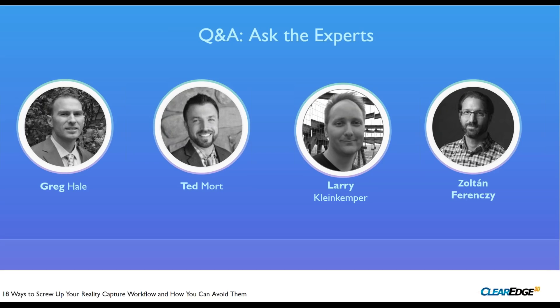A clarifying question for Ted: are you recommending a single high-resolution scan in the middle of a corridor with normal resolution scans elsewhere? Ted confirms: ideally, position a couple of high-resolution scans in the corridor — it takes a bit longer but gives greater point density at distance to help alignment. However, it's not required. If the field crew ran through at typical density, you can still apply the workflow — you might need to pick two structural positions instead of one, but the approach is applicable either way.